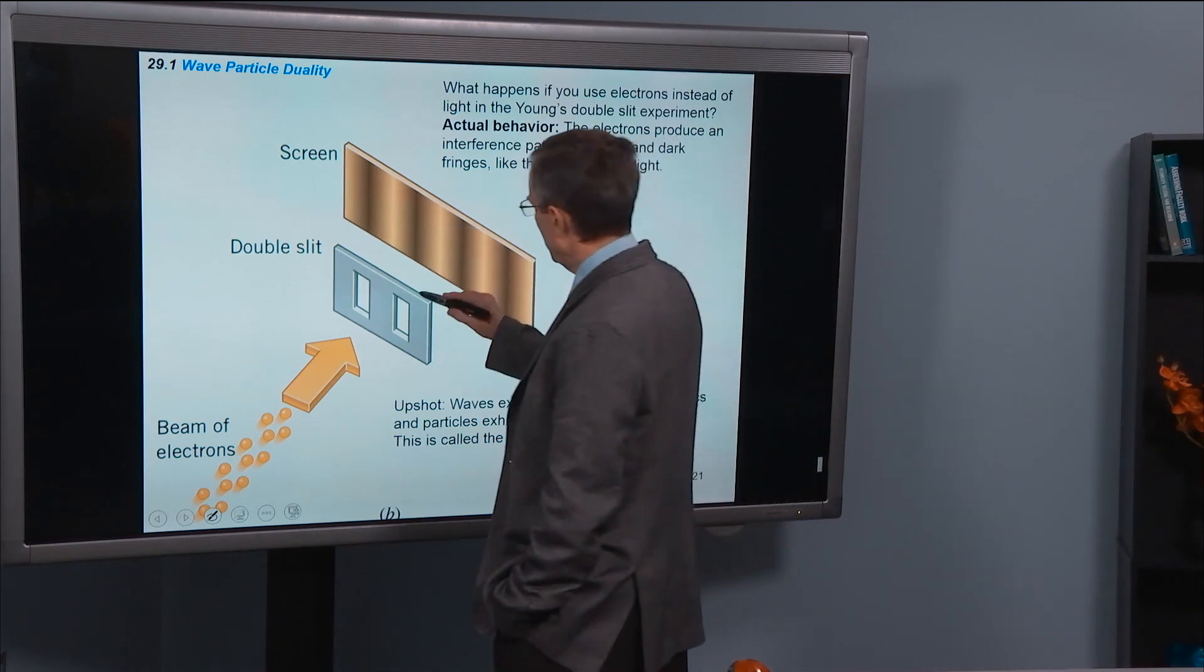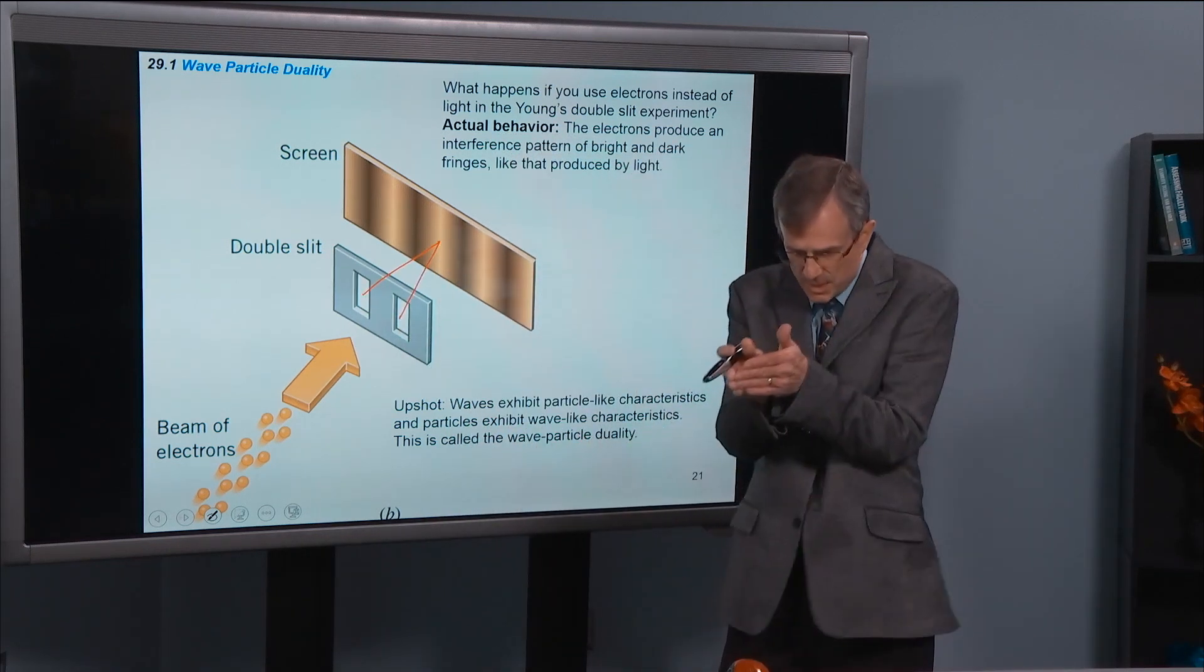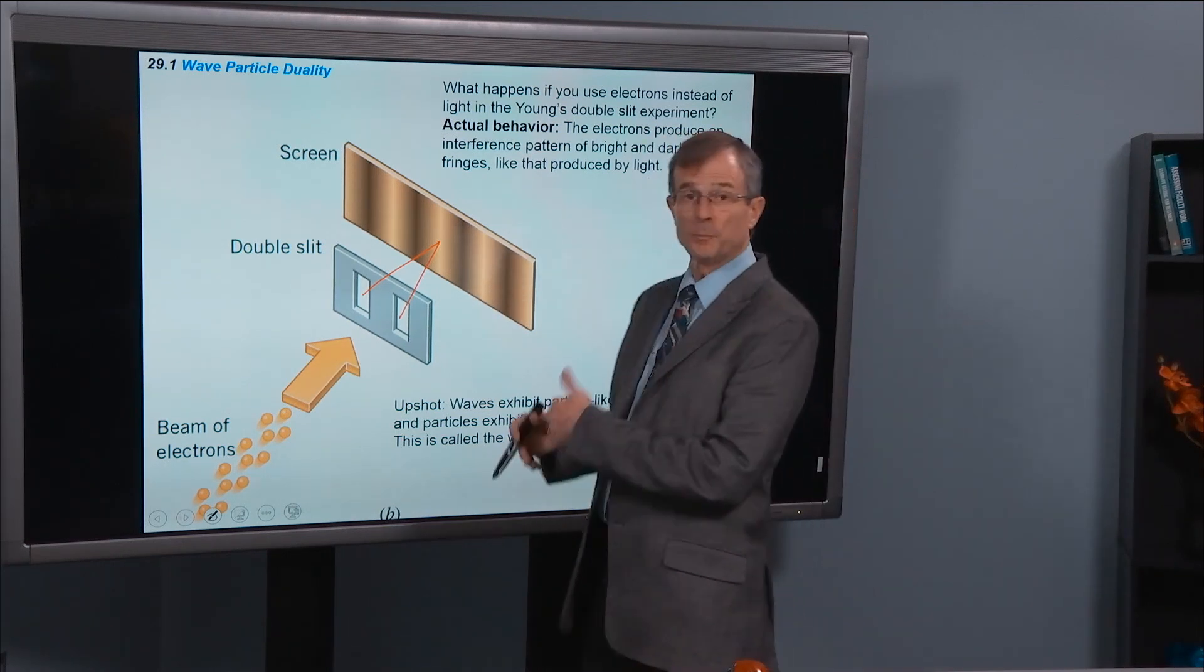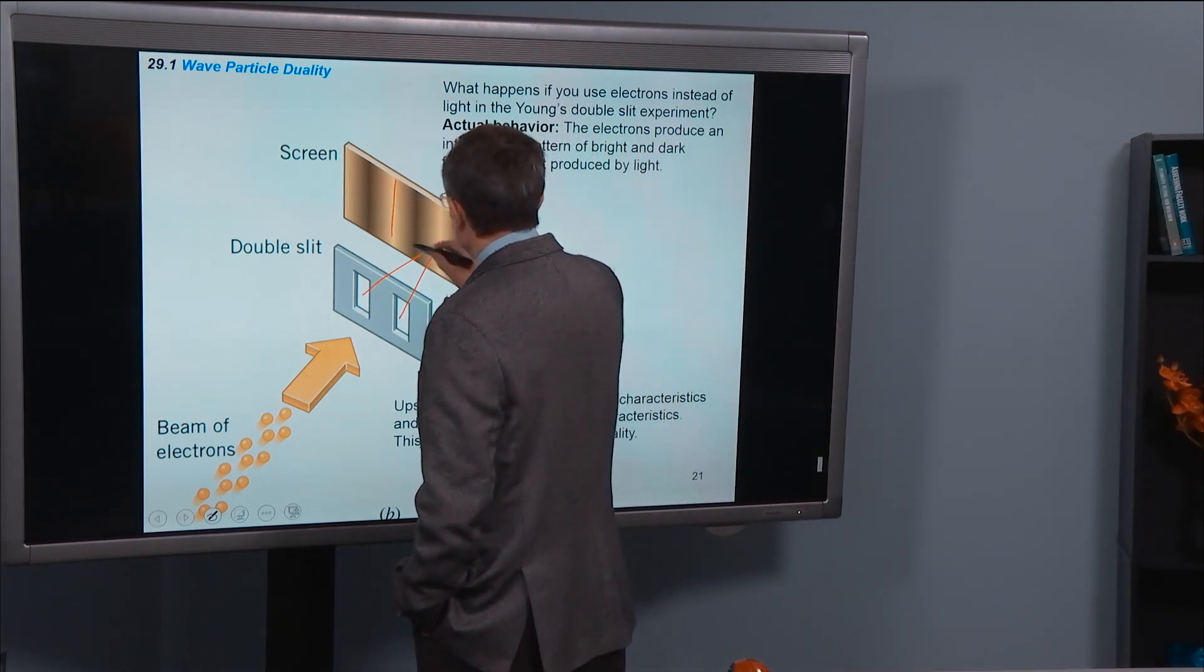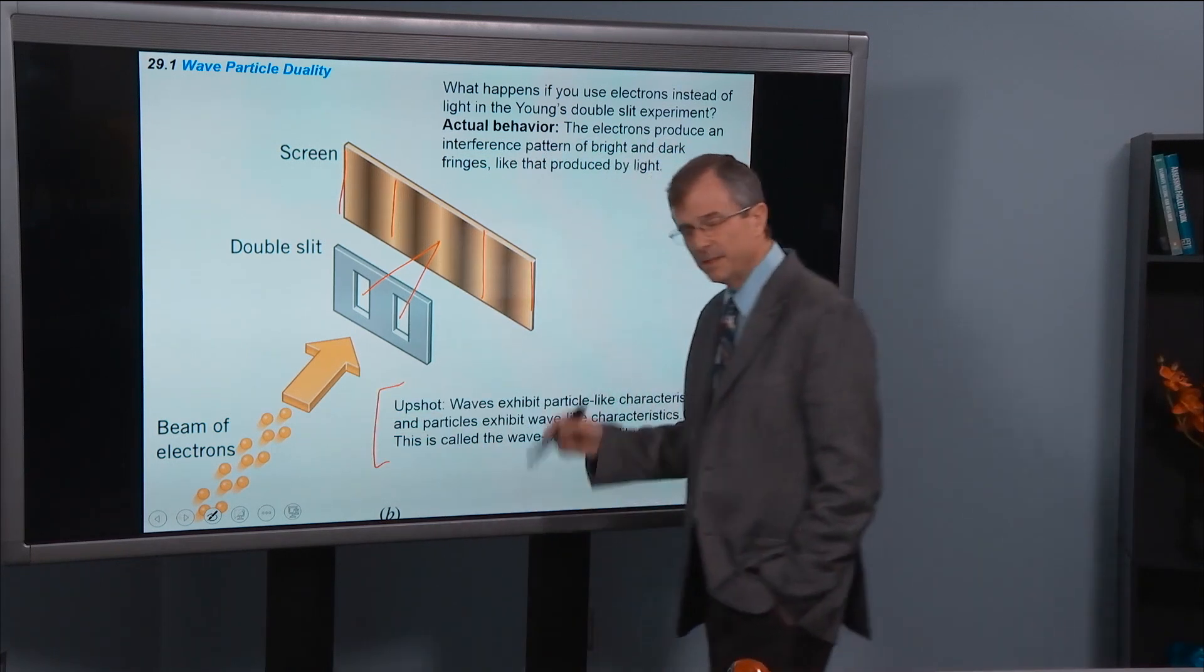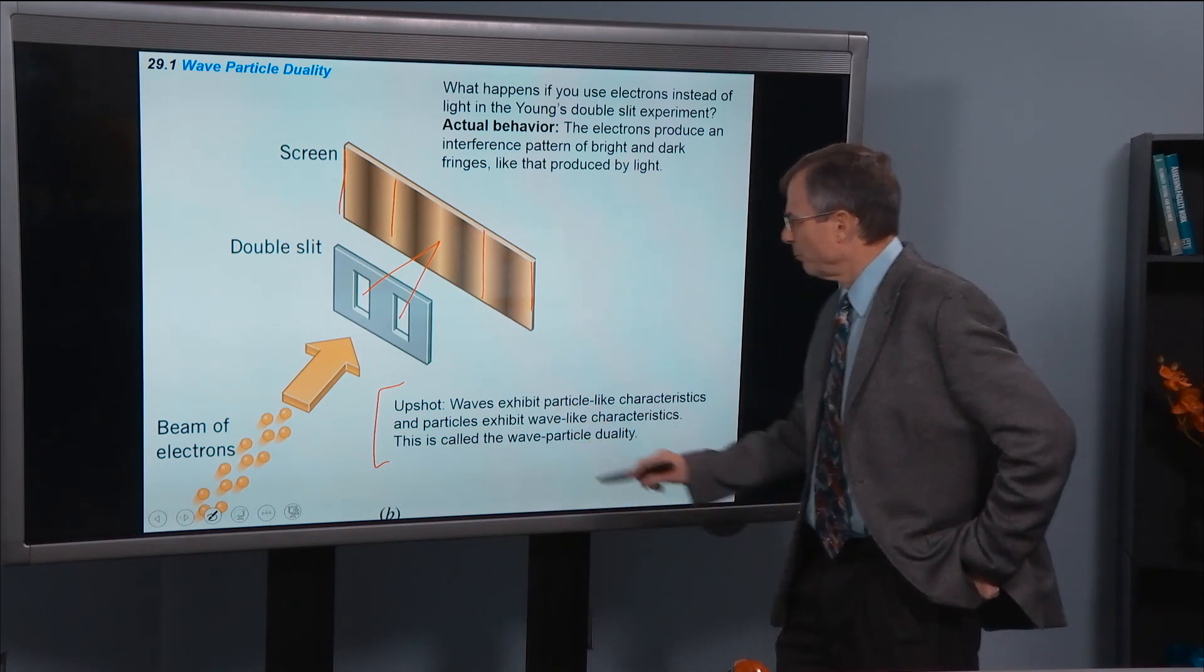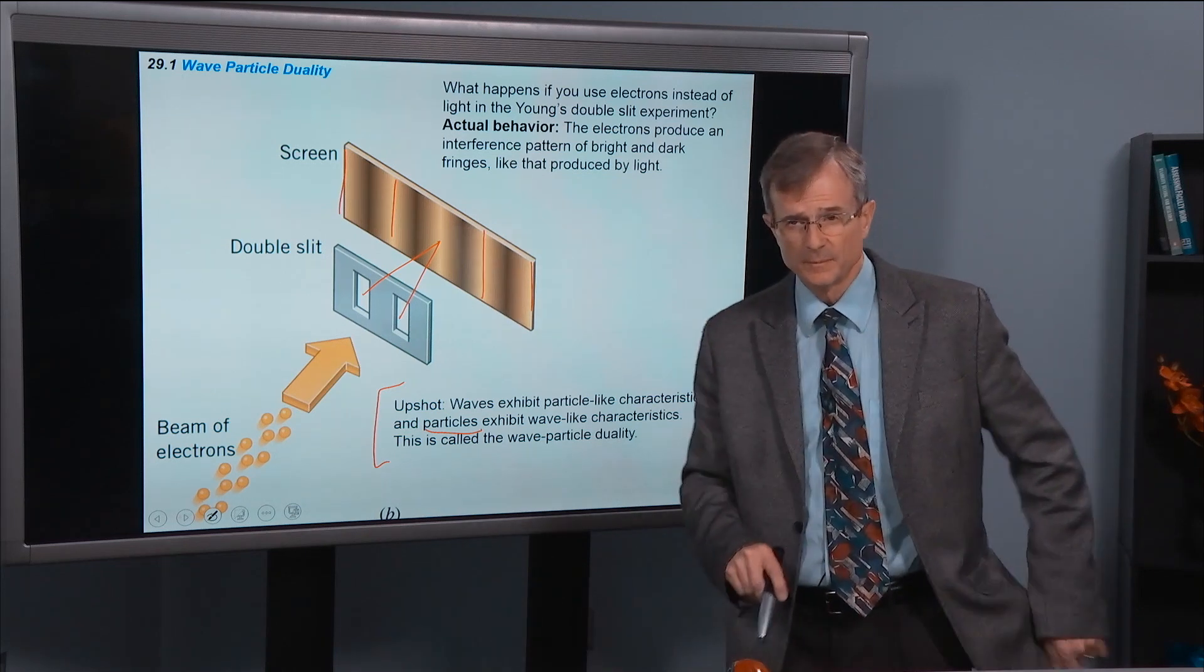So we've got a bright spot in the middle. Remember? So if we look at the very middle central point, right smack dab between those two slits, we get a bright spot, not a dark spot like you'd expect. And then you get another bright spot here and here and then further out, bright, dark, bright, dark fringes. And so the upshot is that in this experiment, these particles, electrons, exhibit wave-like characteristics. It's called the wave particle duality.